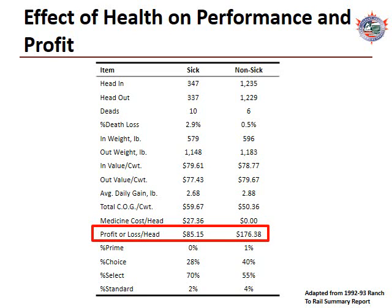Once all factors were considered, this report suggested that non-sick cattle were just over $90 per head more profitable than sick cattle. However, one assumption was that the dry matter-to-gain conversion ratio differed between sick and non-sick calves. As we subsequently review the results from peer-reviewed publications, this initial paradigm will be challenged, which results in BRD having a lesser economic impact.